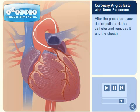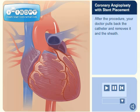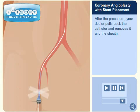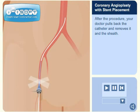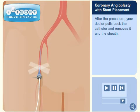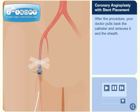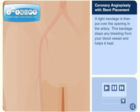After the procedure, your doctor pulls back the catheter and removes it and the sheath. A tight bandage is then put over the opening in the artery. This bandage stops any bleeding from your blood vessel and helps it heal.